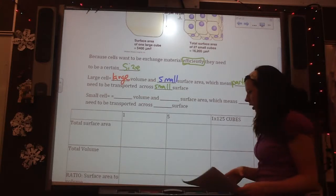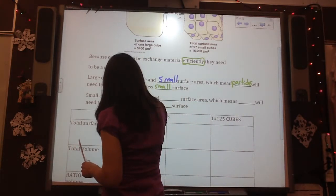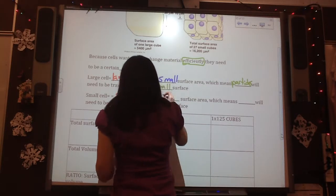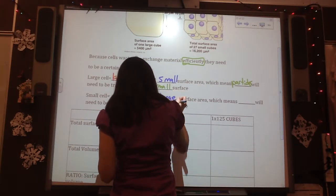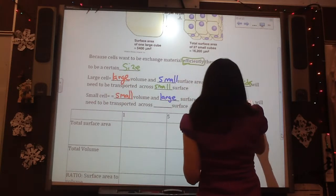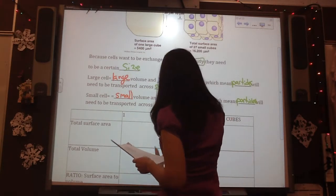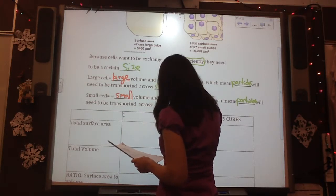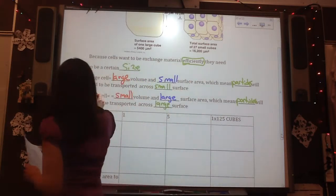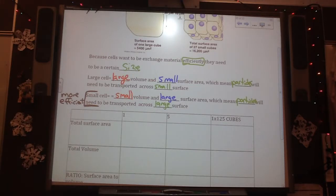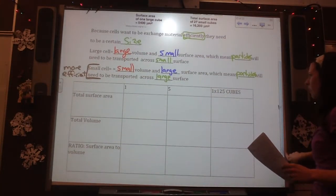A large cell will have a large volume and a small surface area, comparatively. Which means that particles will need to be transported across a small surface. But they have to go through a lot of volume. Comparatively, the small cell, comparatively, it would have a small volume compared to a large surface area. Which means particles will need to be transported across a large surface area. So, this situation is more efficient.